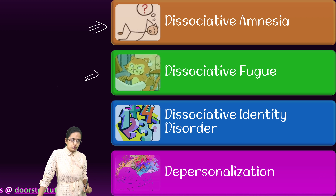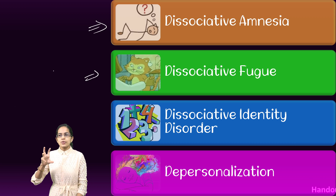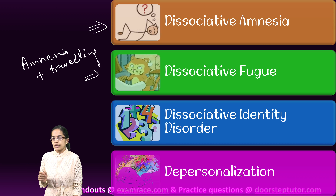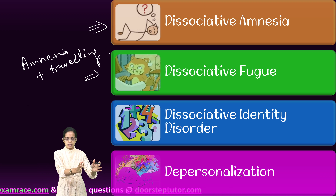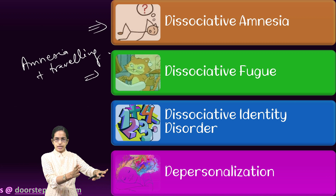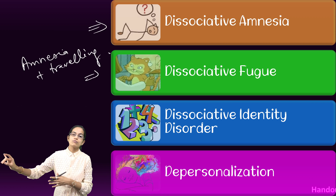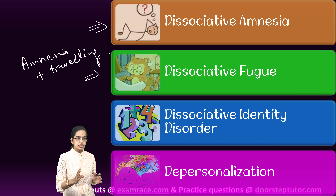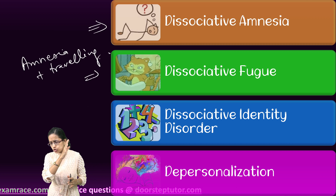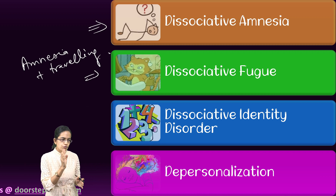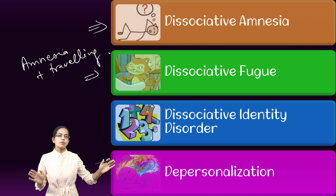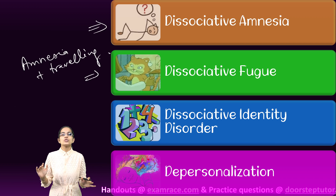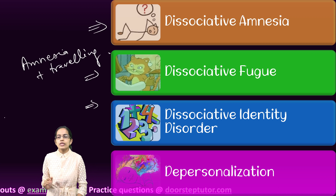Dissociative fugue is when amnesia — loss of memory — is combined with traveling away. For example, if a stressful situation occurred in City A, the person not only forgets it but also quits City A and moves to another city. The person has dissociative amnesia and simultaneously tries to run away. There is complete loss of memory of events that happened during the fugue state.